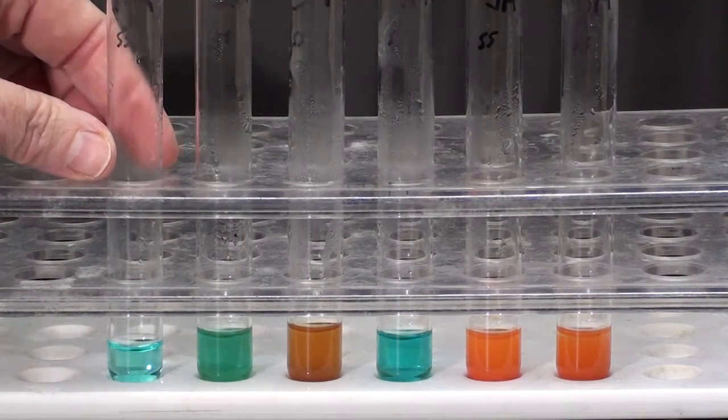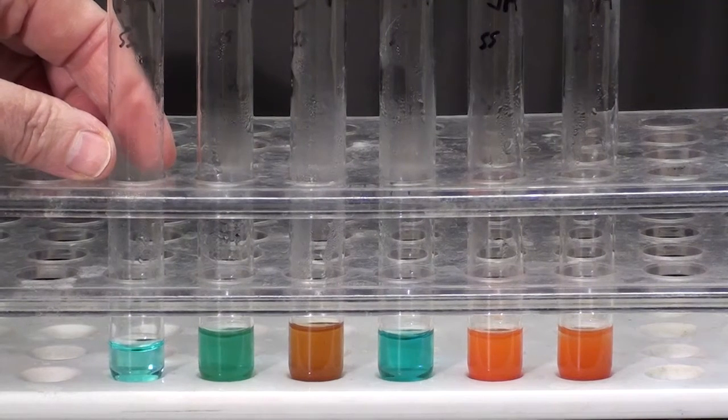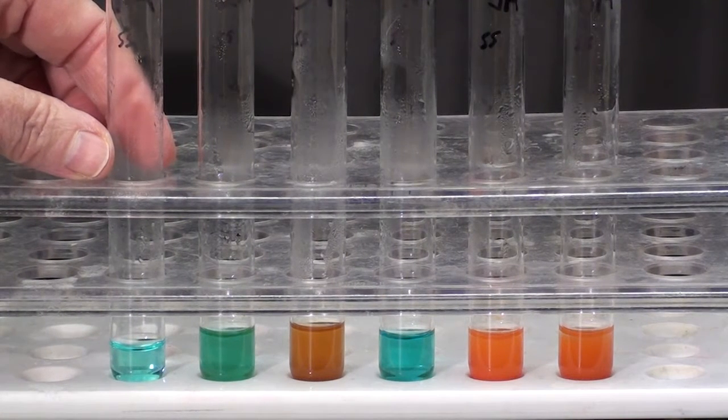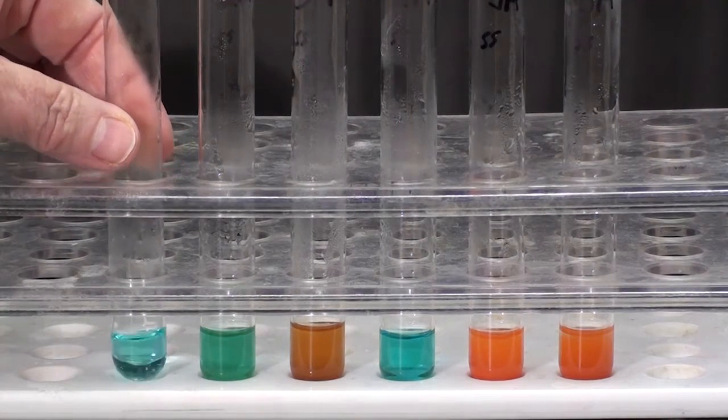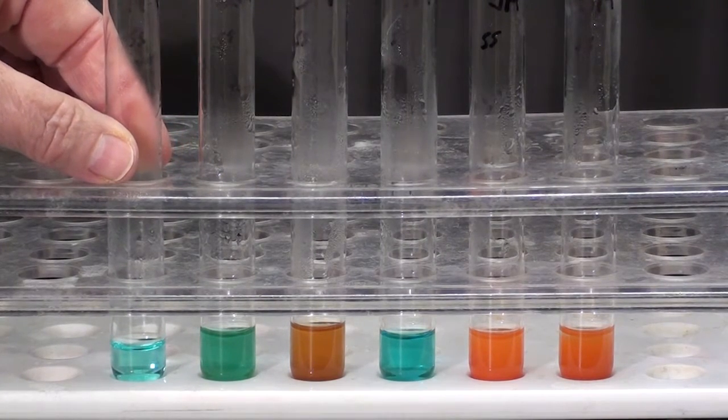Tube one started with amylase and water. It was placed in the body temperature for a half an hour. Benedict's is blue if no sugar is present.